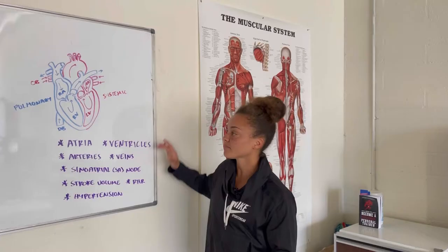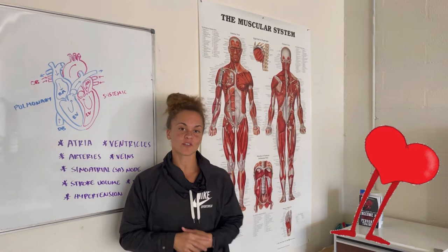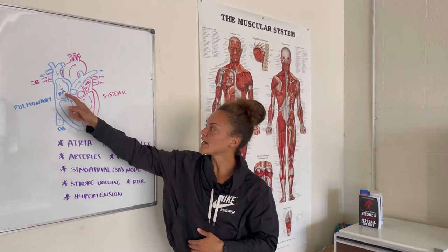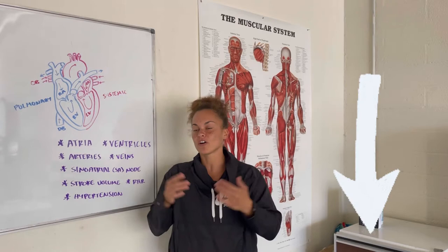The heart is comprised of four chambers. We have superior chambers, meaning above, which can be called your atria — we have your right atrium and left atrium. Then we have inferior chambers, meaning below, which can be called your ventricles. You have your right ventricle and left ventricle.